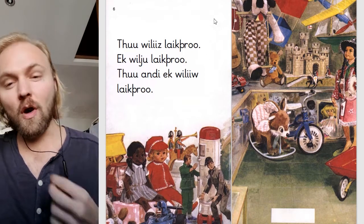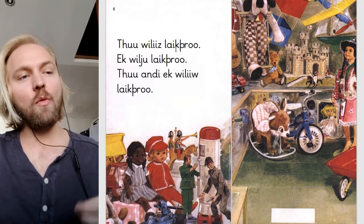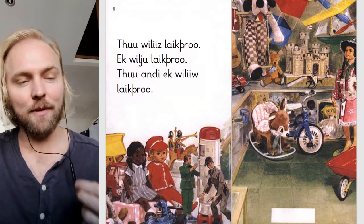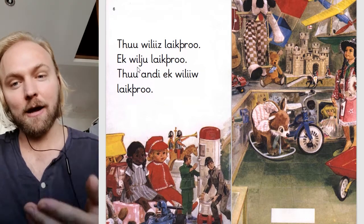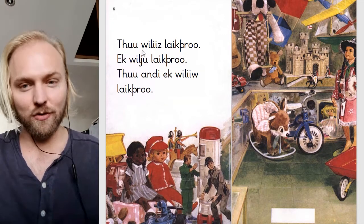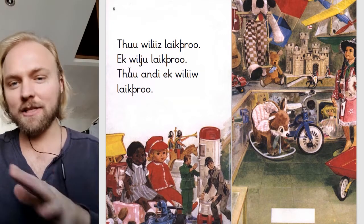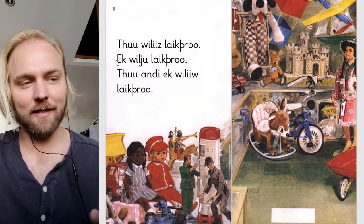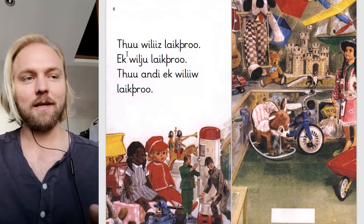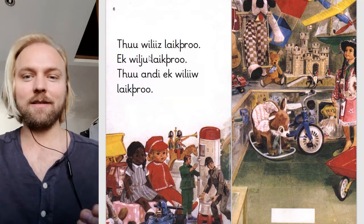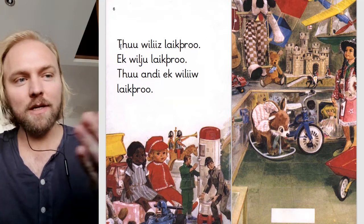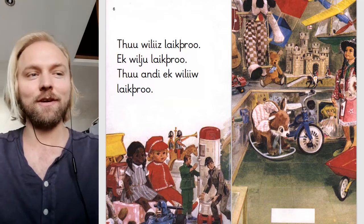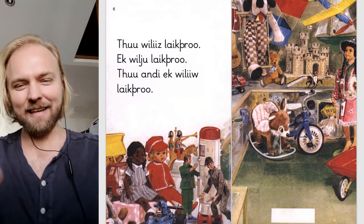So 'you want toys, I want toys, you and I want toys' — but here we're using the doer ending because we're the ones doing the action, we're wanting toys. 'Like' is a special verb, it's very strange. The other verbs are just normal. 'I want toys, you want toys, you and I want toys' — yeah, it's strange.